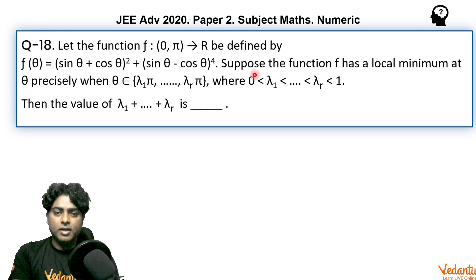Suppose the function f has a local minimum at θ precisely when θ belongs to the set {λ₁π, λ₂π, ..., λᵣπ}, where 0 < λ₁ < ... < λᵣ < 1. Then the value of λ₁ + ... + λᵣ is what we need to find.